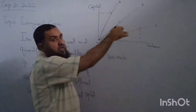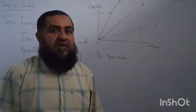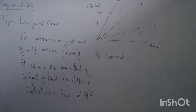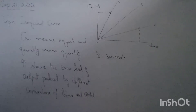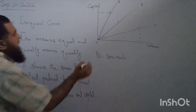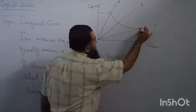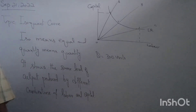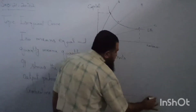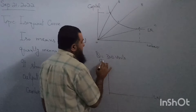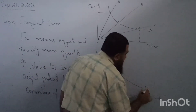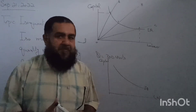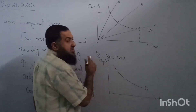If we join these three points — X, Y, and Z — we get a curve which is called the isoquant curve. Now drawing it in a smooth diagram: here I am taking labor and here I am taking capital. The different combinations of labor and capital along this curve will have the same level of output produced. Any point along this curve will give us the same level of output.